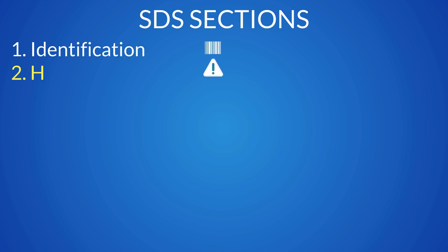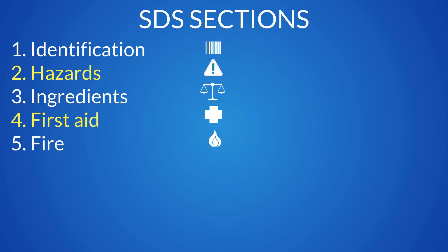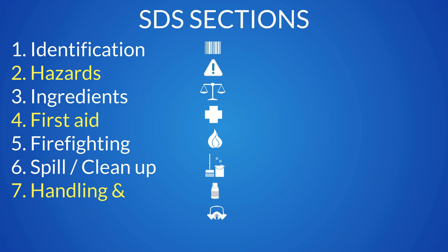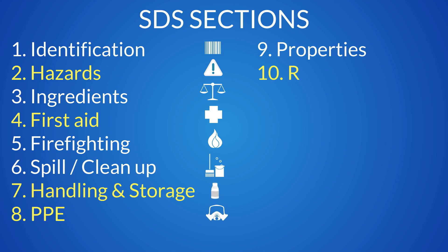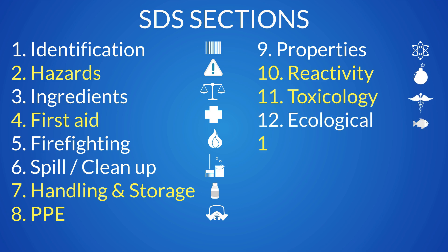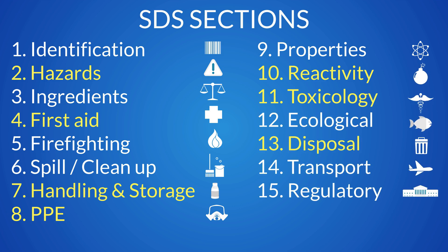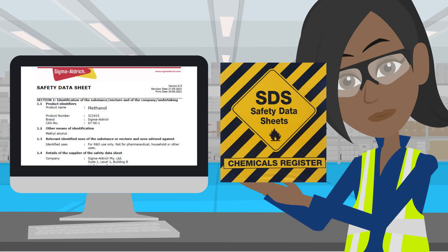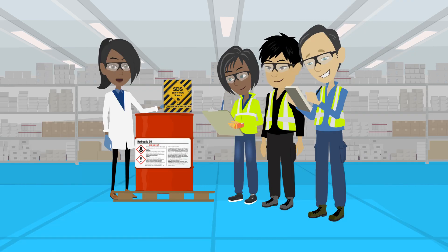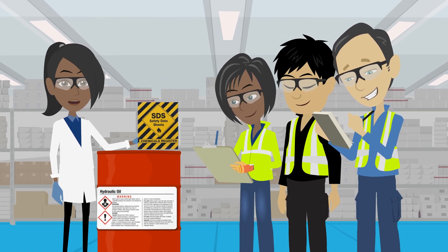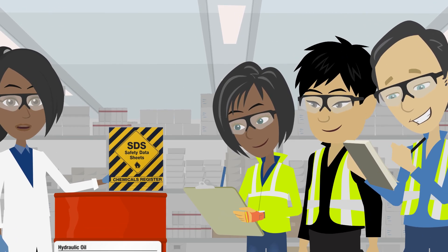The SDS is comprised of 16 sections, covering information on hazards, first aid, handling and storage, PPE, reactivity, toxicology, and disposal, to name just a few. Before using any substance, the manufacturer's SDS must be obtained, fully reviewed, and any hazards mitigated. Anyone who may be exposed to a substance has the right to know and be given access to the SDS and any other relevant information.